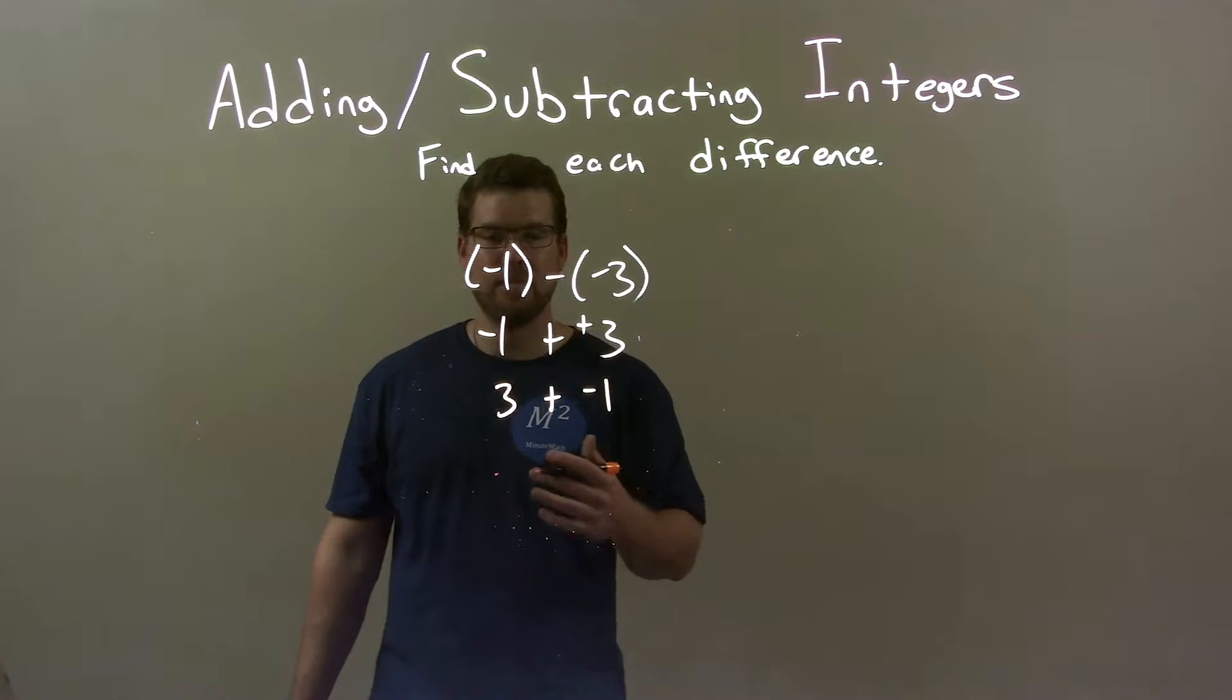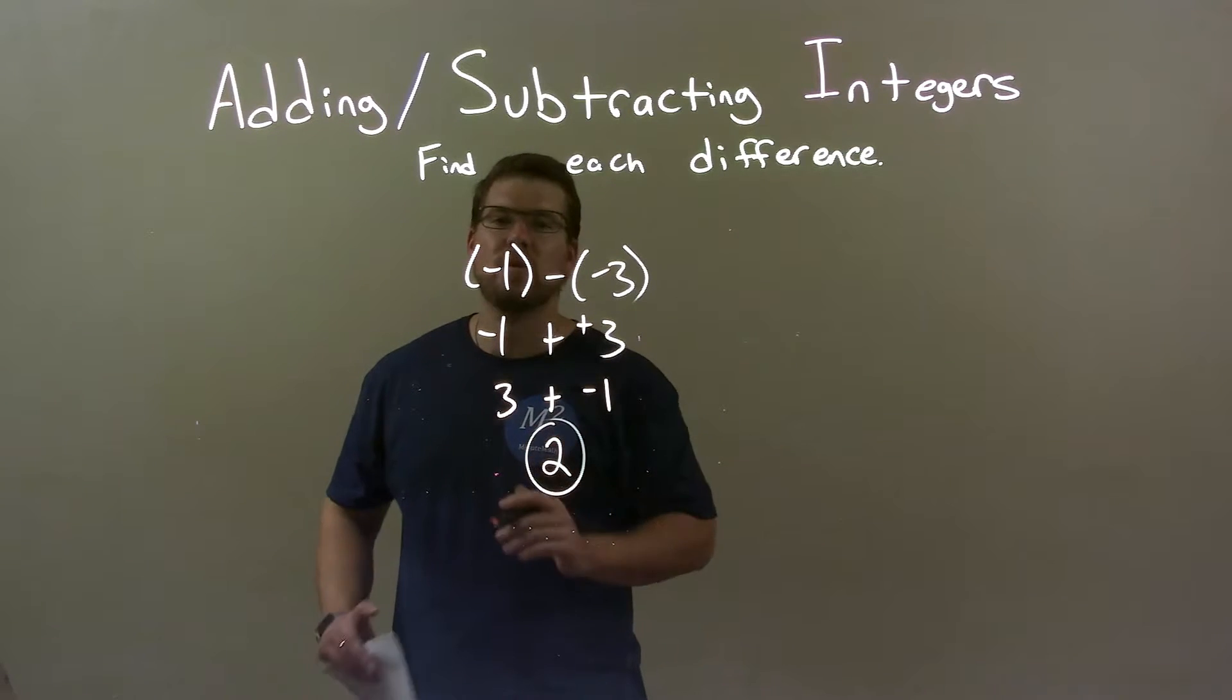And 3 plus a negative 1 is easy, right? It's the same thing as 3 minus 1, which is just 2. So, our final answer here is just 2.